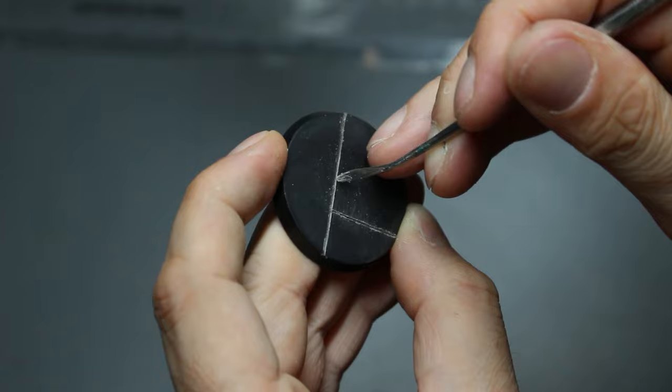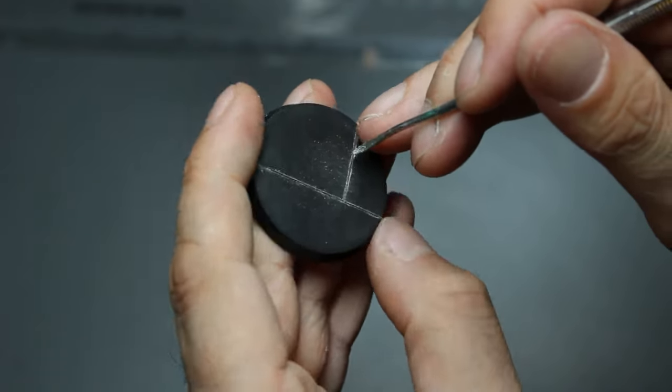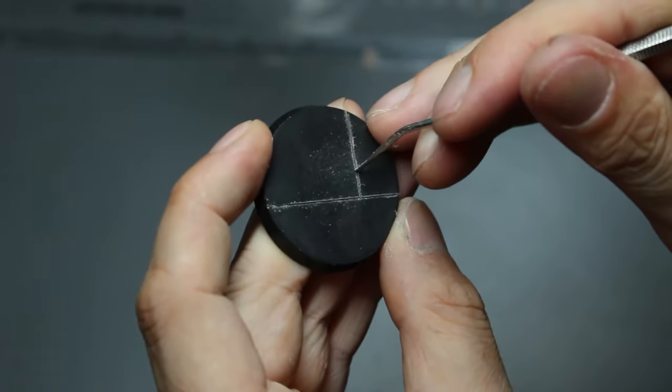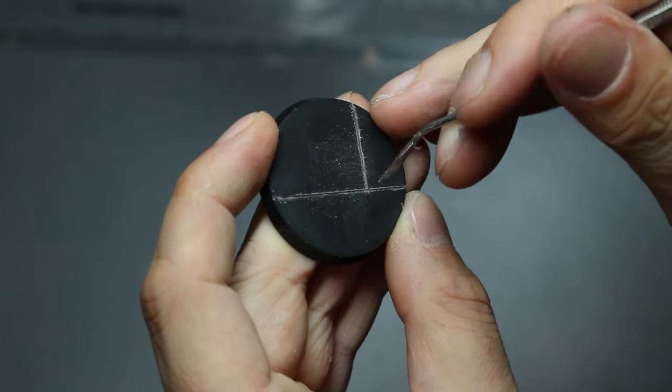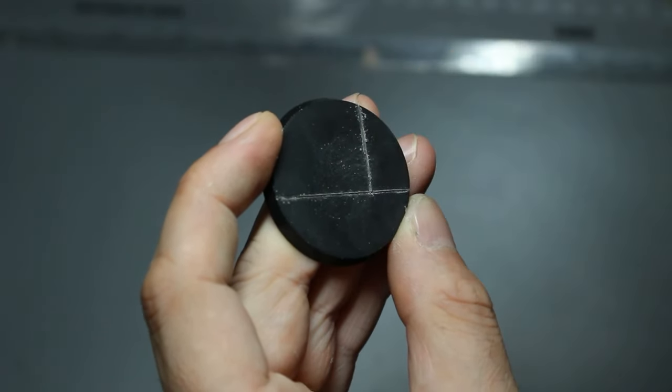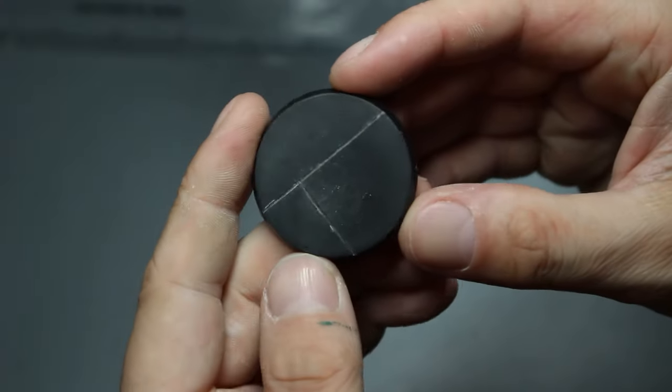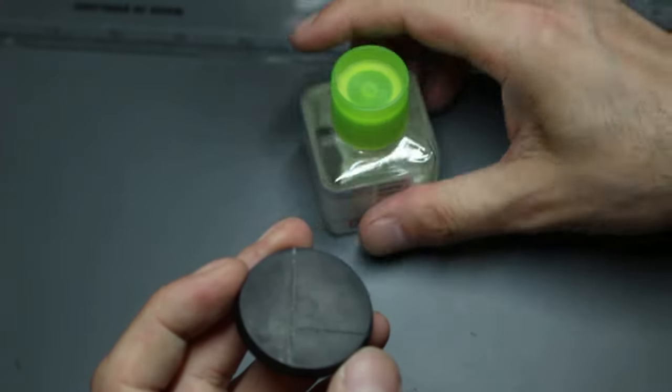Then use the edge to just trim away some of the rough sections. You'll get little bits of what they call flash, and just a little bit of plastic that will make it look rough.